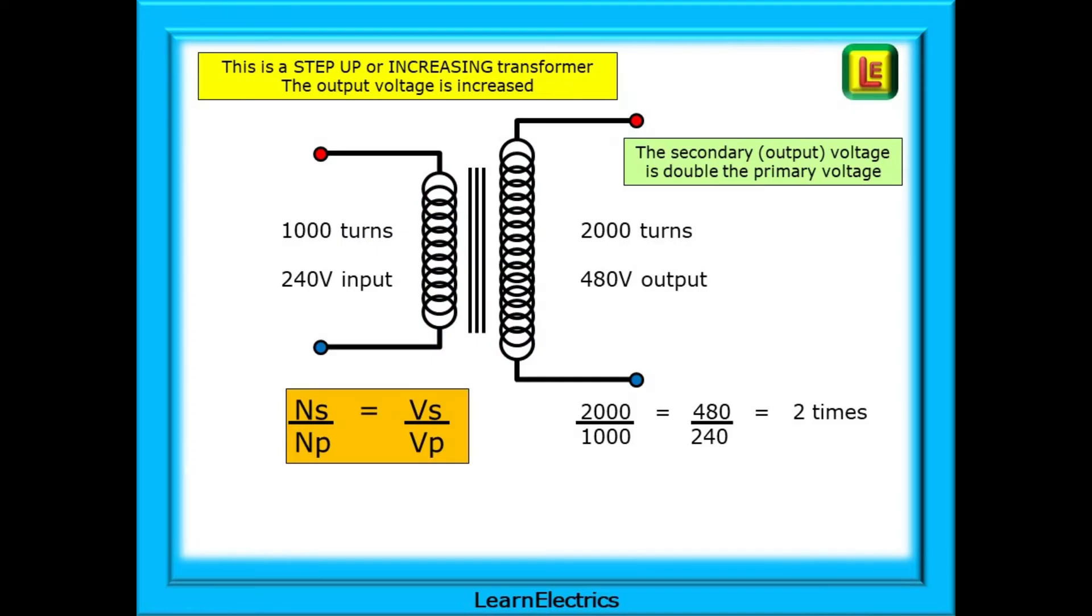This slide shows an increasing transformer. The output voltage is increased. The secondary winding has double the turns of the primary, so the output voltage will be two times the input or double. 240 volt input, 480 volts output. Observe that NS over NP is equal to VS over VP.